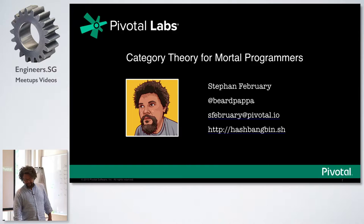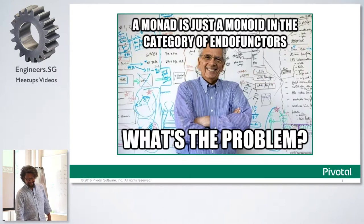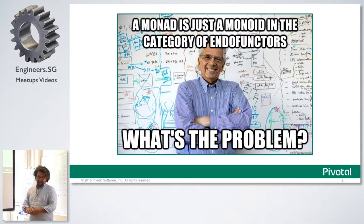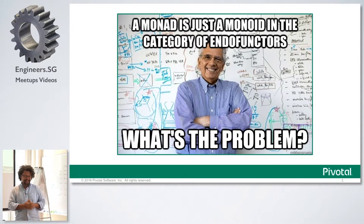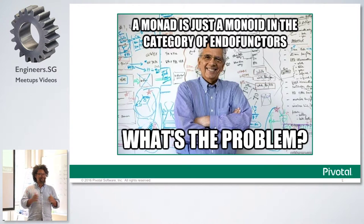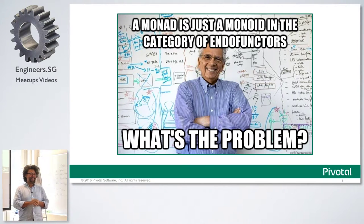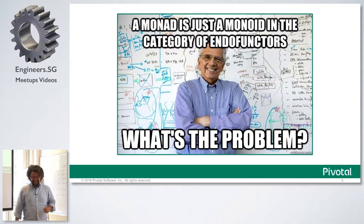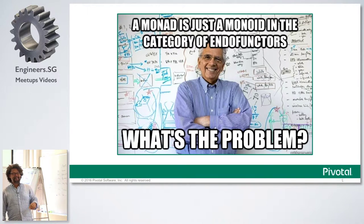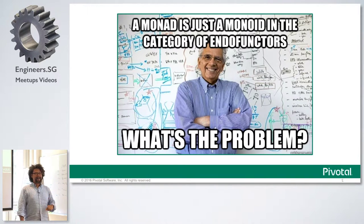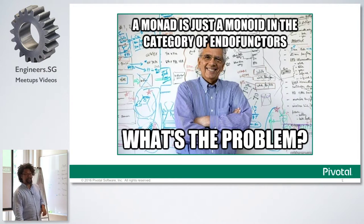If you Google category theory, you're likely to come up against this thing: 'A monad is just a monoid in the category of endofunctors. So, what's the problem?' And I know we all had a professor like this in university. Disclaimer — I've only got undergrad maths, and that was 20 years ago, so please limit your questions to simple ones.